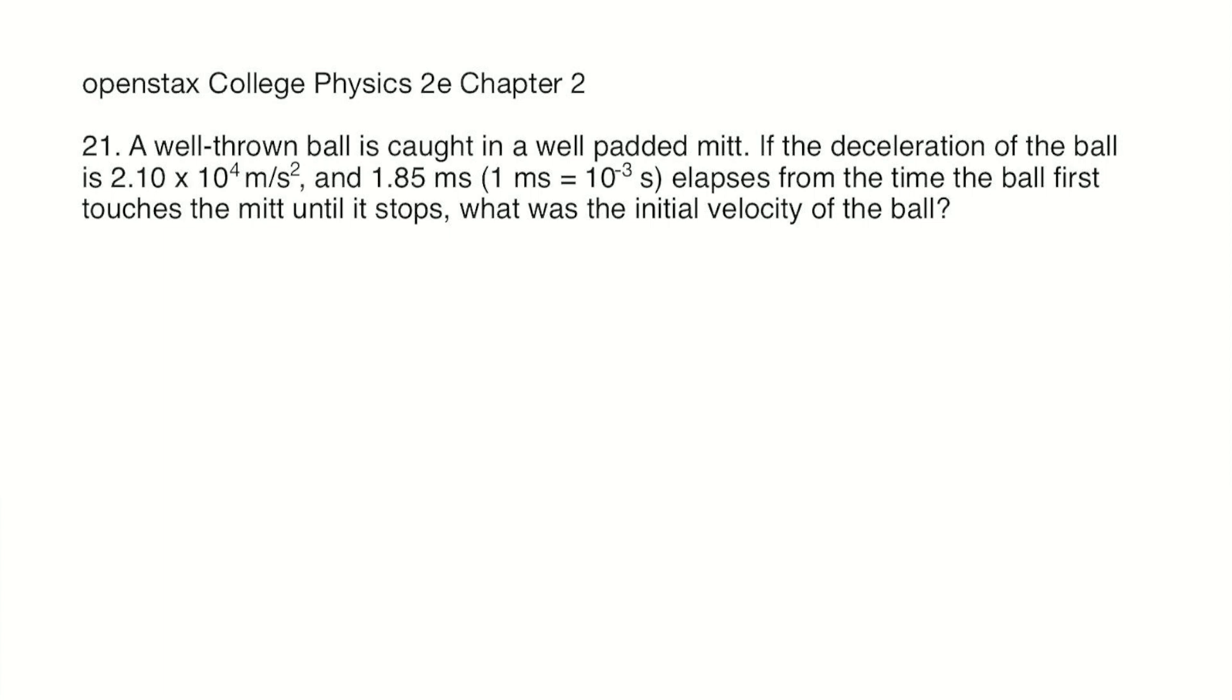We're given a deceleration, that means the ball is slowing down, and that makes sense because the ball is moving when it touches the mitt and then it stops. That means acceleration is opposite in direction to velocity, so let's choose the velocity to be in the positive direction and then a is in the negative direction.